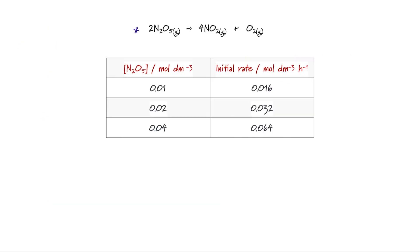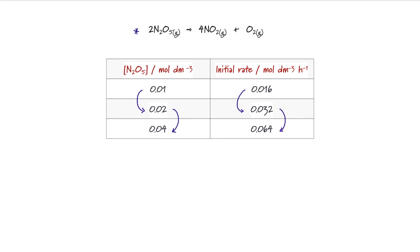The first thing we need to figure out from this set of results is the order of reaction with respect to the dinitrogen pentaoxide. Looking at the results, we can see that doubling the concentration of N2O5 from 0.01 to 0.02 mol dm⁻³ causes the initial rate of reaction to double. And again, doubling the concentration from 0.02 to 0.04 causes the initial rate to double from 0.032 to 0.064. So the concentration is proportional to the initial rate, meaning this reaction is first order with respect to dinitrogen pentaoxide.